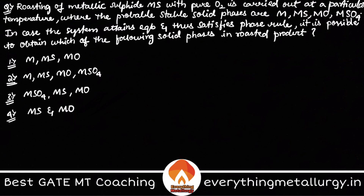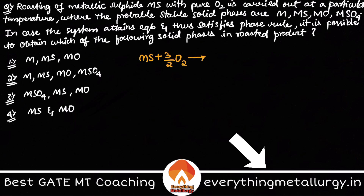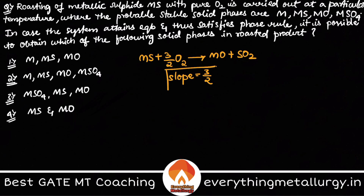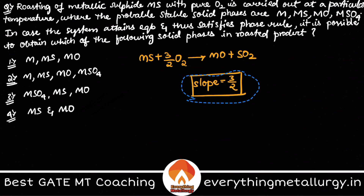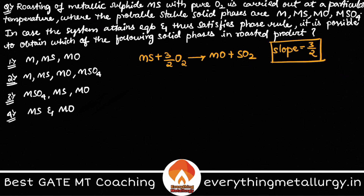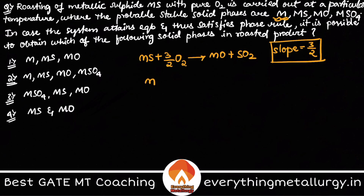Let me write the different equations. The first equation is: MS + 3/2 O₂ → MO + SO₂, and the slope of this line is 3/2. The next reaction — since M is also a stable solid, it also gets oxidized to form MO.